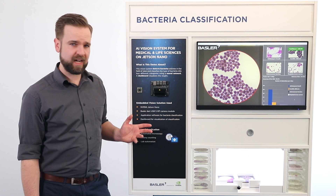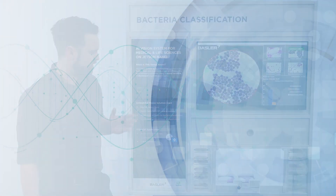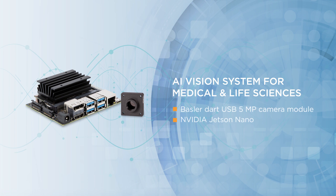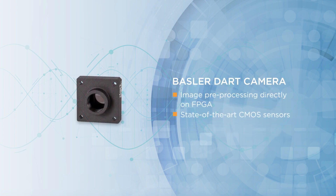In this demo setup we used an embedded vision system consisting of a Basler DART camera and an embedded board to show you how bacteria classification can be done. This small single board camera, the Basler DART, is a fully industrial camera coming along with image pre-processing directly on the FPGA as well as a state-of-the-art CMOS sensor.